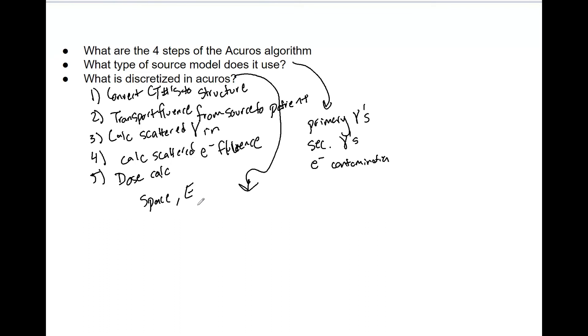But of course, we want a faster yet similarly accurate algorithm. And that's what we're doing here. So discretize space, energy, you can also discretize the angle and the transport cutoff. So that is very basic info about ACUROS.